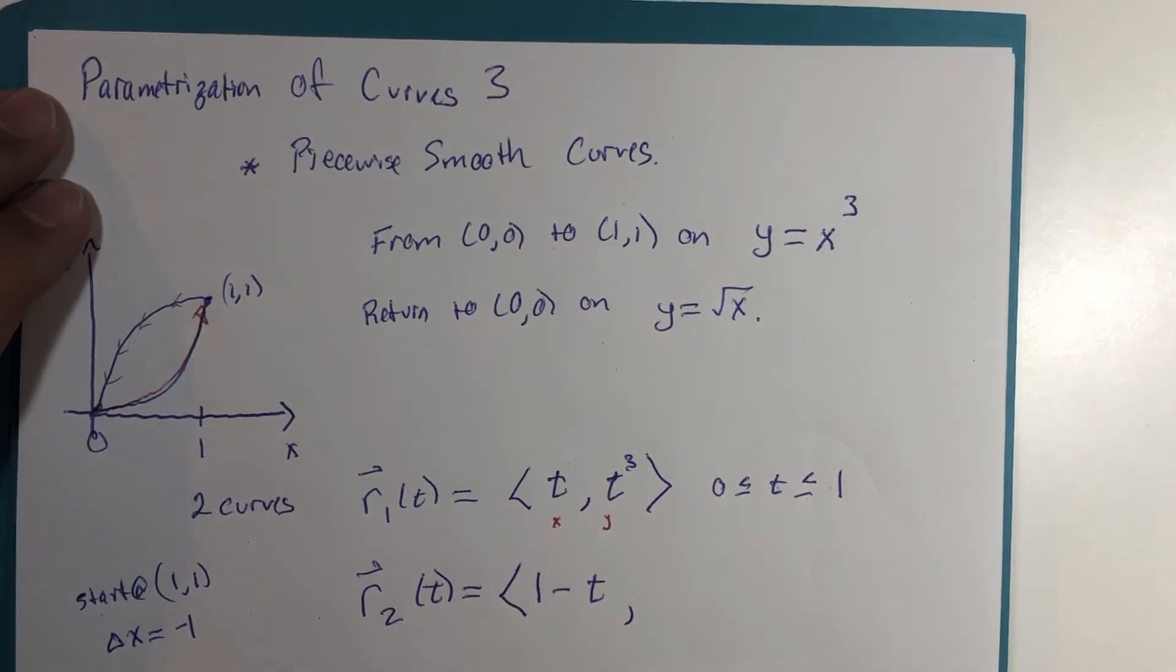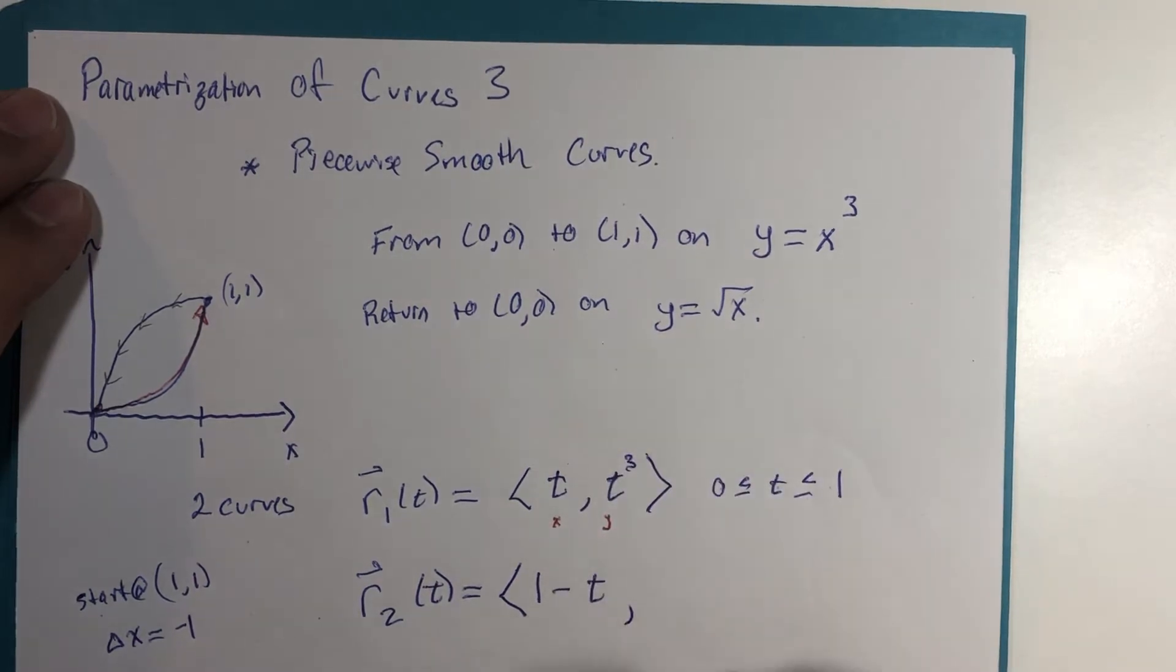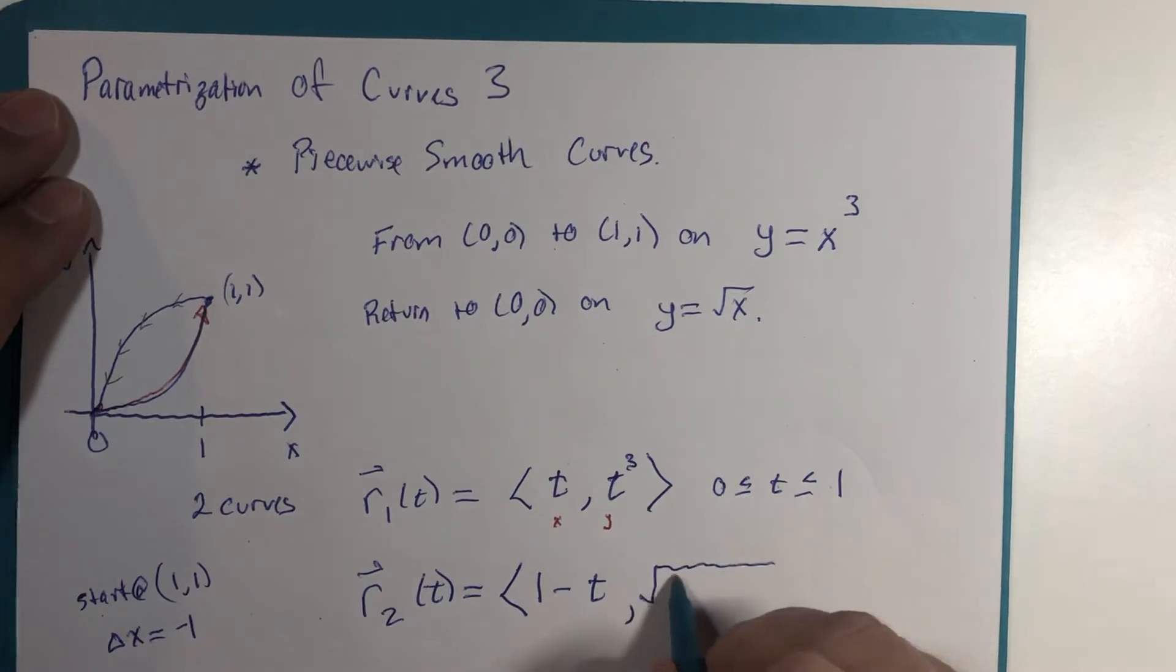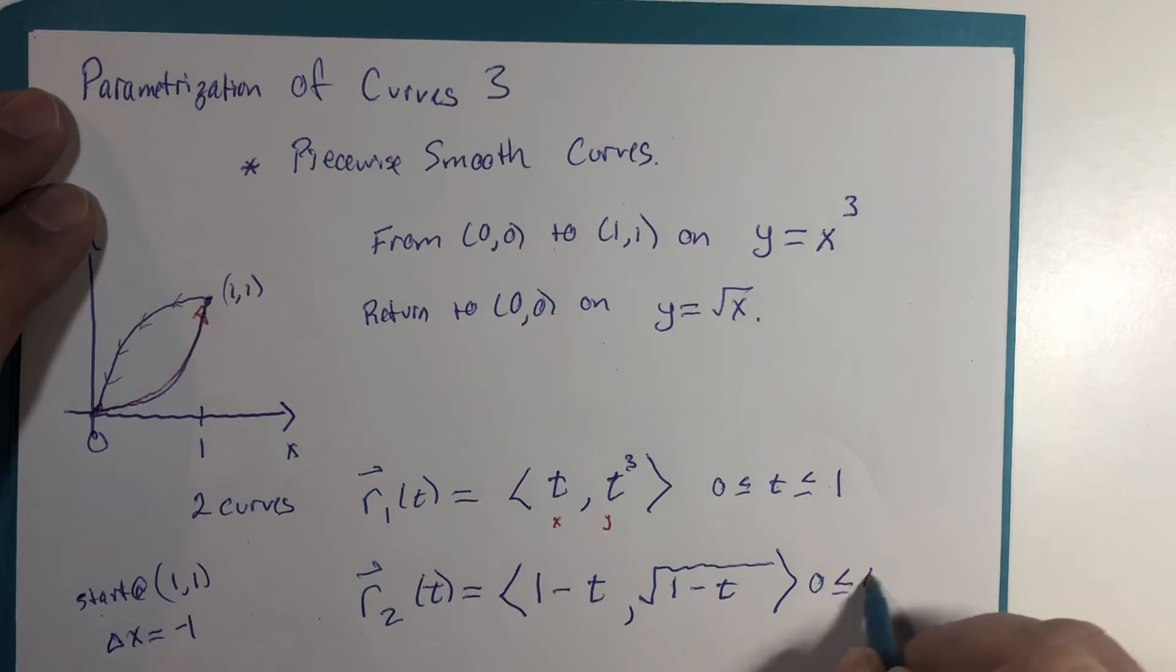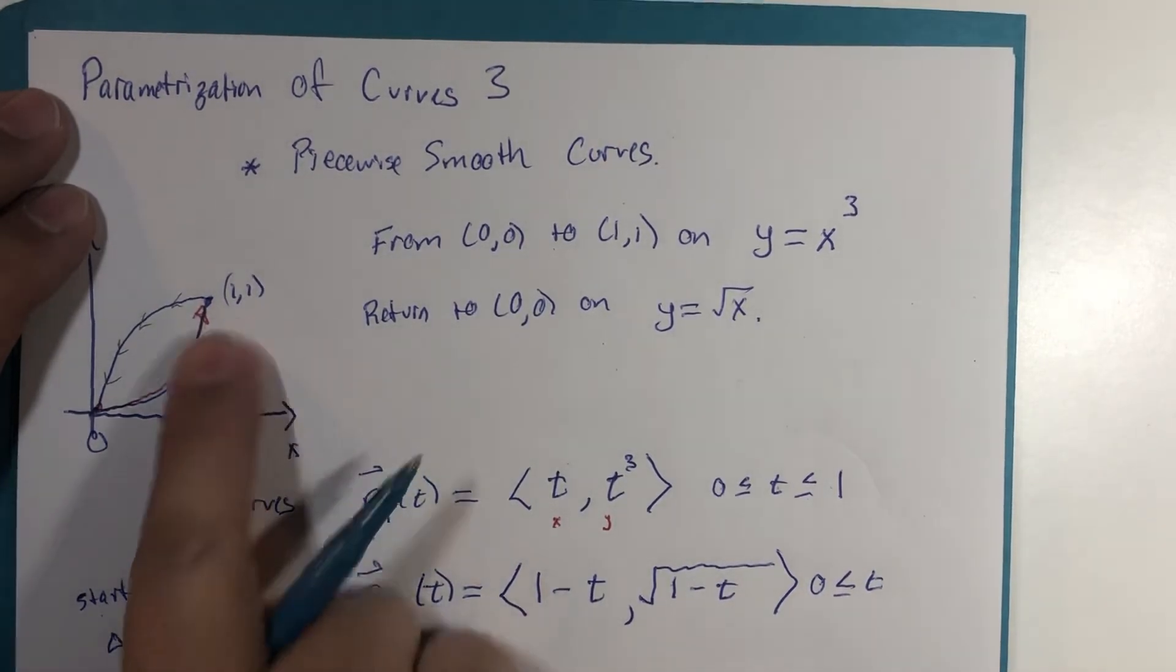So it starts at one, it goes back to zero, it's going left one unit minus one t. And then according to what we've been doing, I could just say that y is the square root of that, one minus t would go here. And then there might be a little bit of a question mark about the time interval. If we start at t is zero, one minus zero is one, that is the x value.